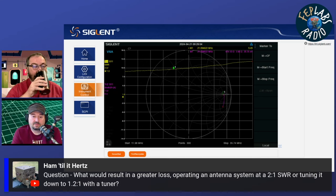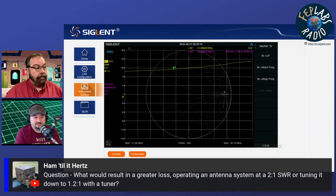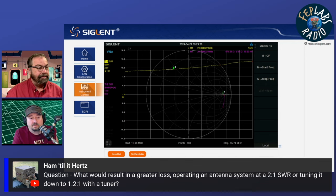Ham Till Hertz has the same question: Would it result in greater loss operating an antenna system at 2:1 SWR or tuning it down to 1:1 with a tuner? There's a lot in that question. A tuner sometimes gets a bad rap for being more lossy than they really are. A lot of times purists say I only operate resonant antennas and I'm not going to use a lossy tuner. At QRP, you're probably not even going to be able to tell a difference given this scenario.